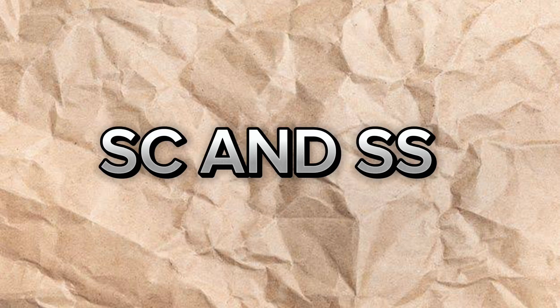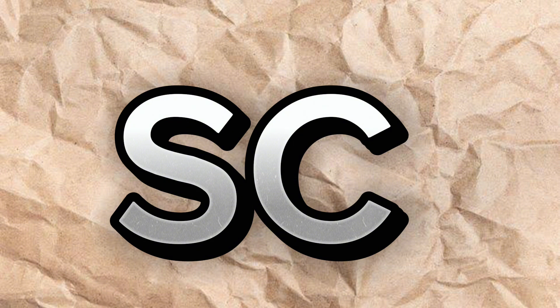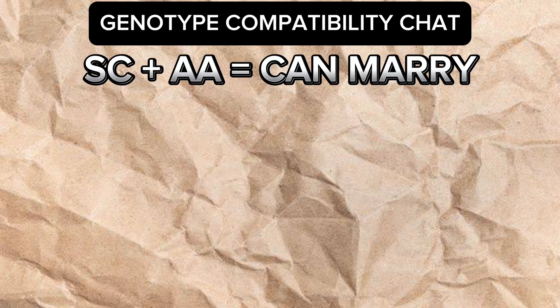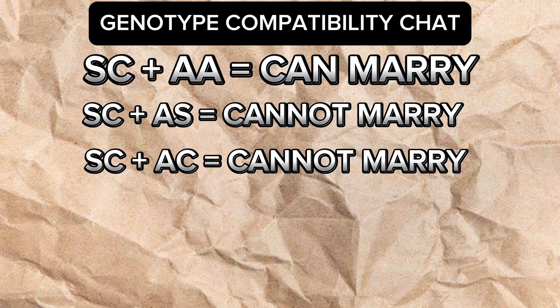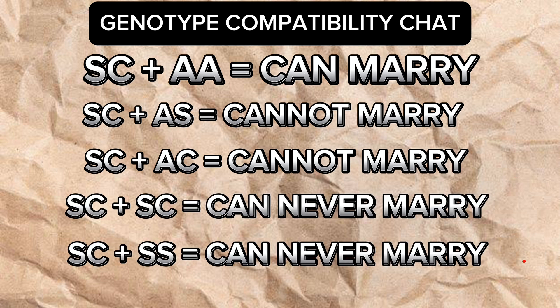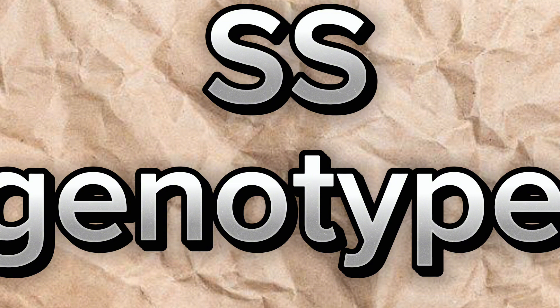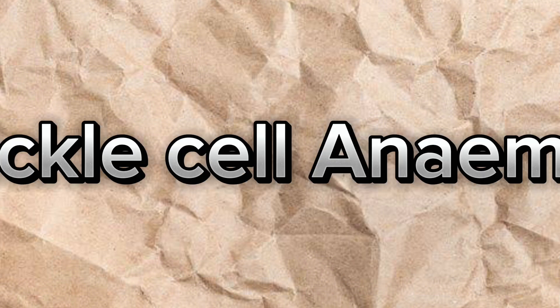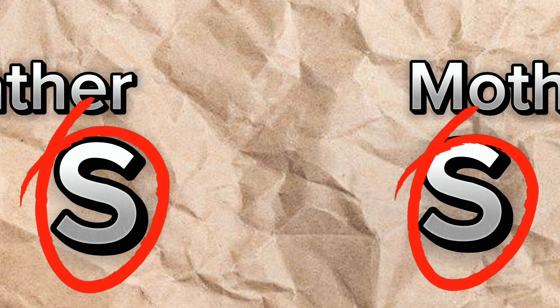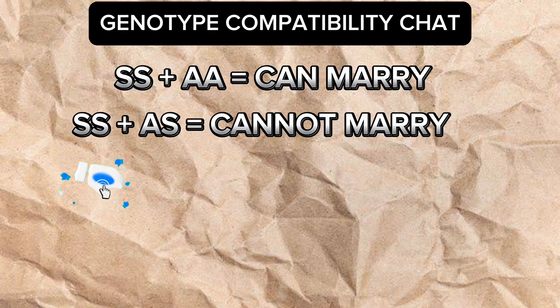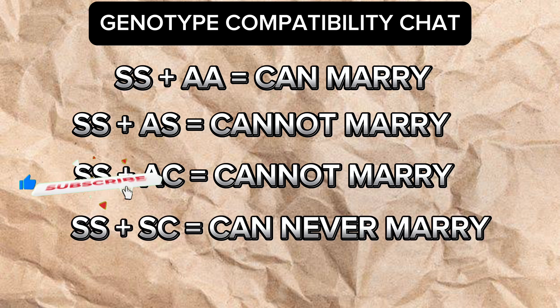SC and SS may not be the same, but some people with the SC genotype can develop a variant of the sickle cell disease. Not all SC people are sick like the SS. SC can only marry AA and cannot marry any other genotype. SS genotype is also called sickle cell anemia. This occurs when an offspring inherits hemoglobin S from both parents — S from one parent and S from the other. SS can only marry AA and cannot marry any other genotype.